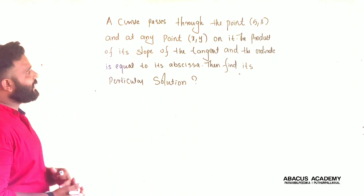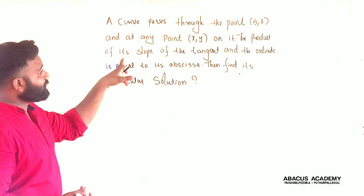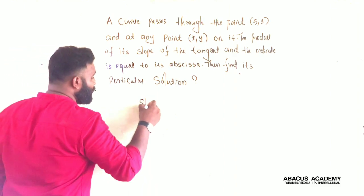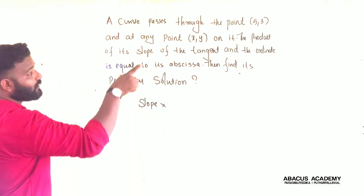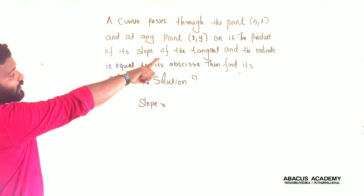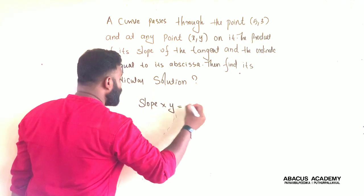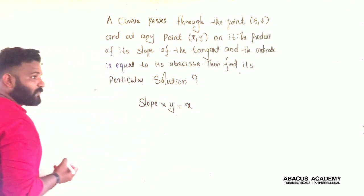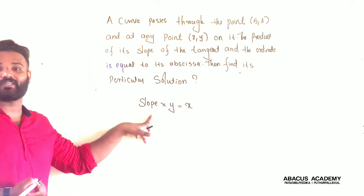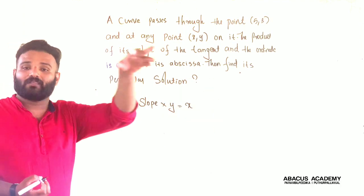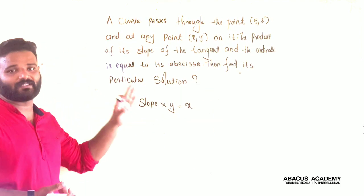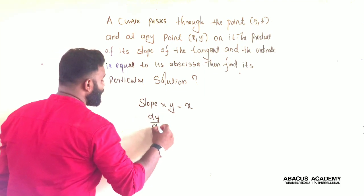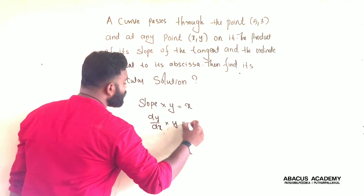The condition is that the product of the slope of the tangent, which is represented as dy/dx, multiplied by the y-coordinate, is equal to its abscissa, which is equal to x. So the given condition is: the slope of the tangent times the y-coordinate equals the x-coordinate. We have to solve this equation. The slope dy/dx into y is equal to x.